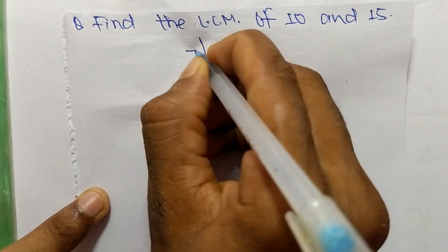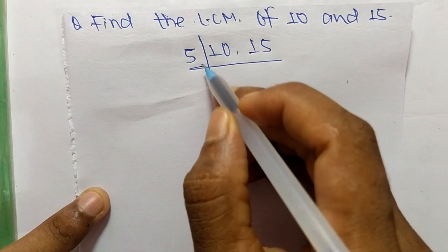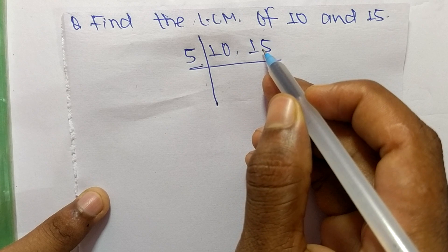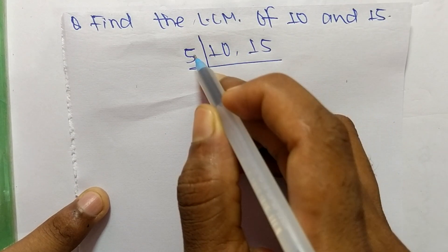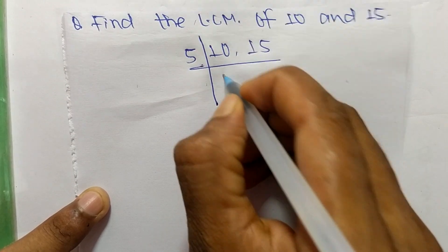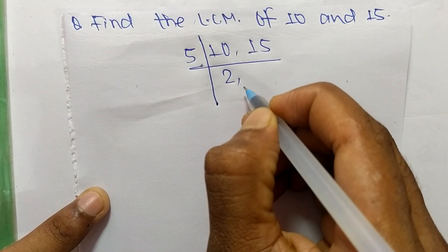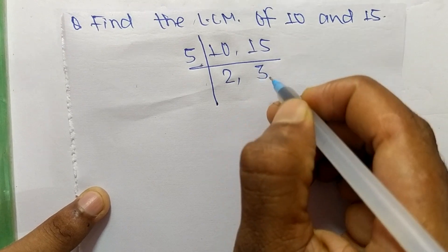So the number is 5. 2 can divide 10 but can't 15, and 3 can divide 15 but can't 10. So we take 5. 5 times 2 means 10 and 5 times 3 means 15.